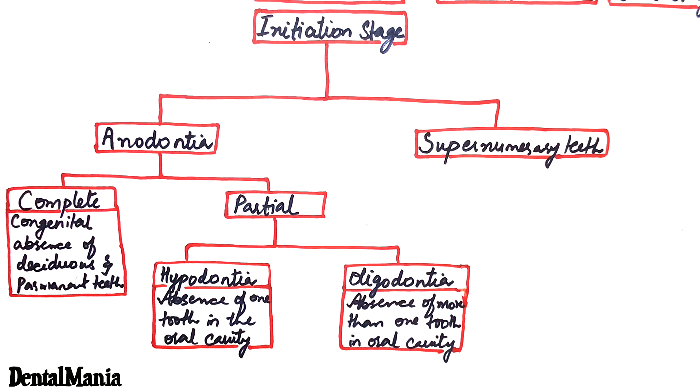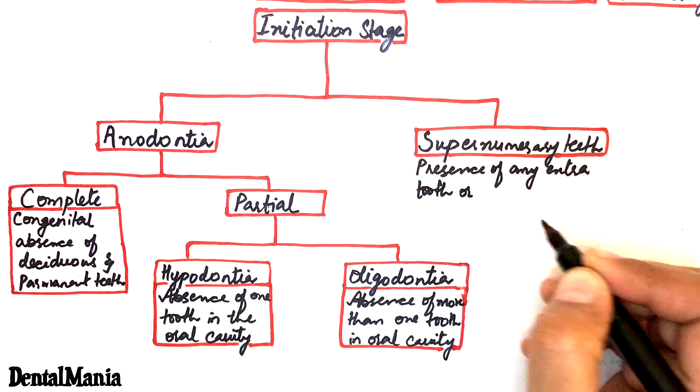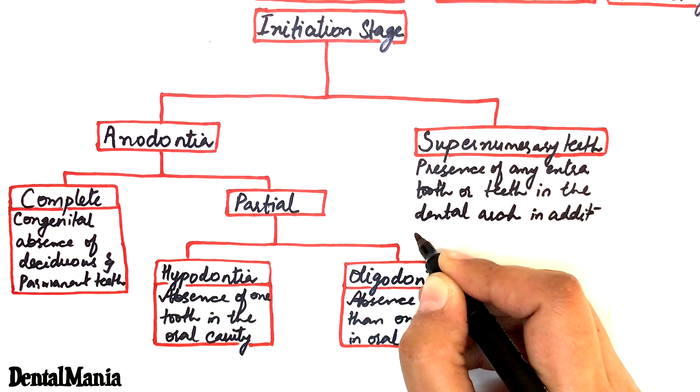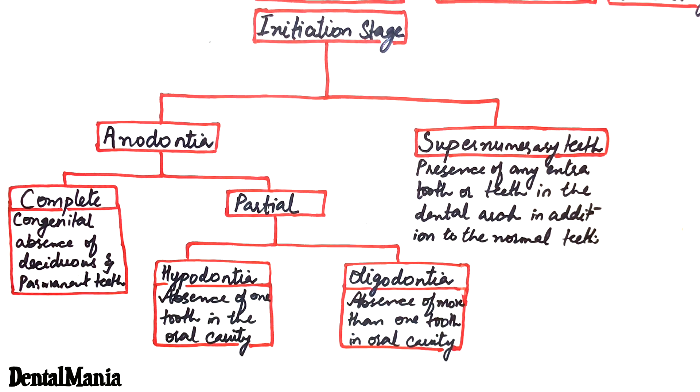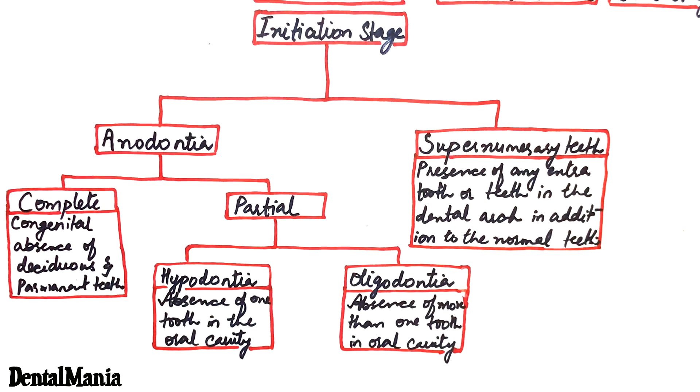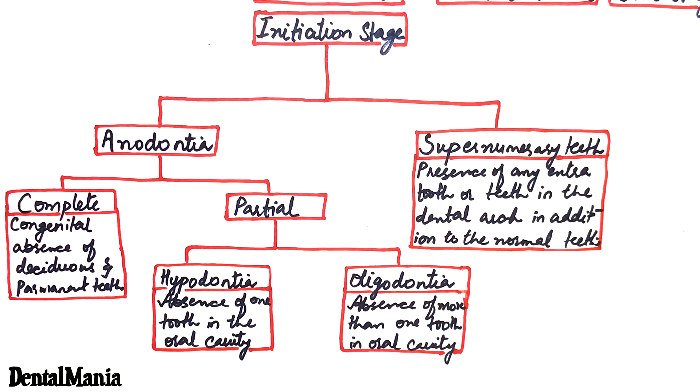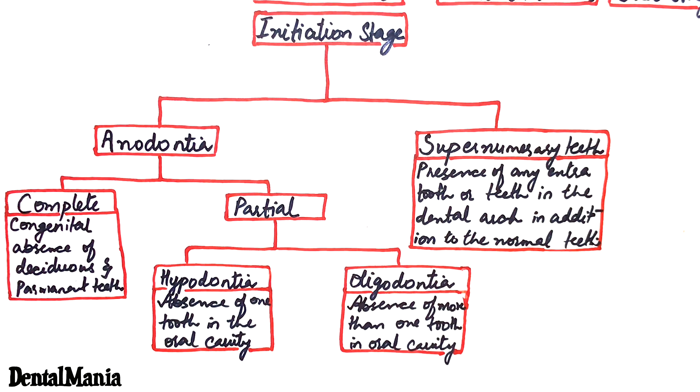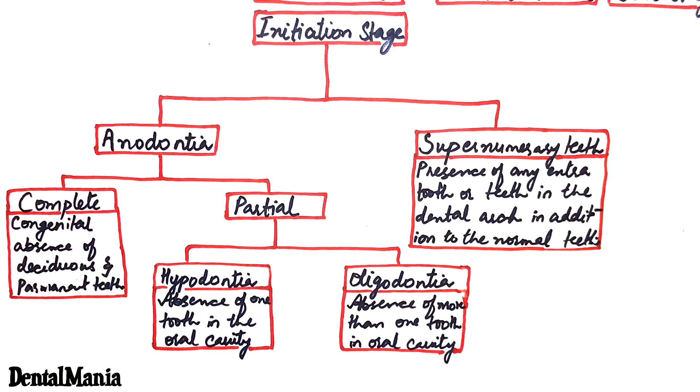The supernumerary teeth are characterized by the presence of any extra tooth or teeth in the dental arch in addition to the normal number of teeth. It may develop either from an accessory tooth bud in the dental lamina or from the splitting of a regular normal tooth bud.